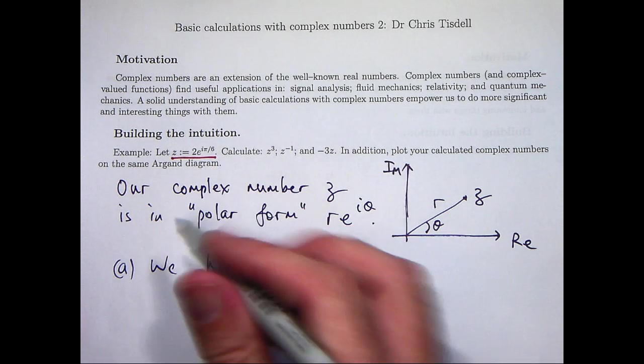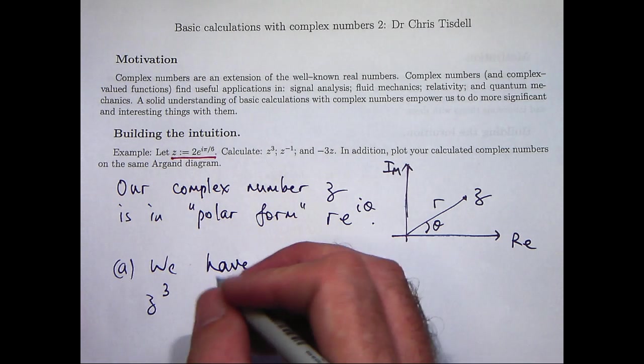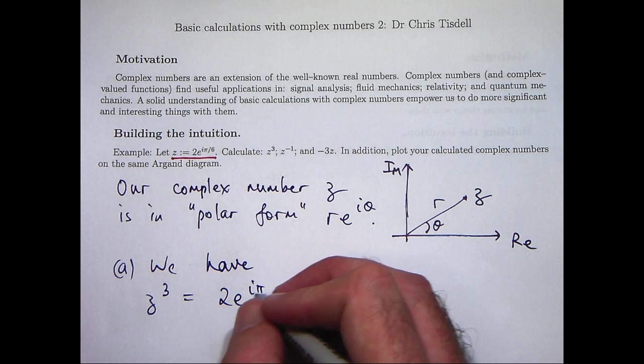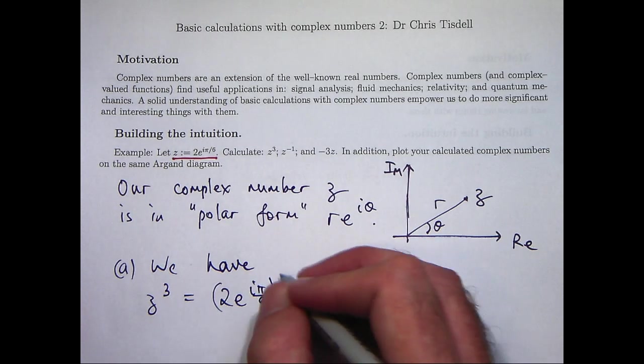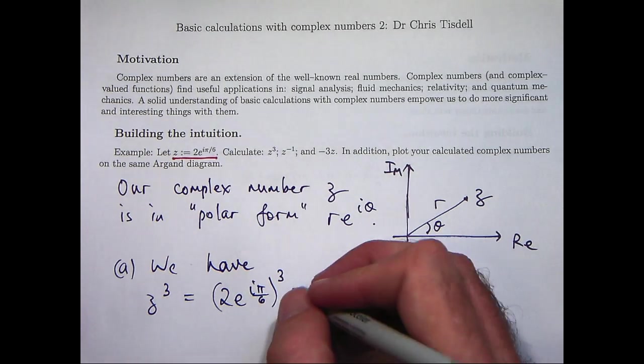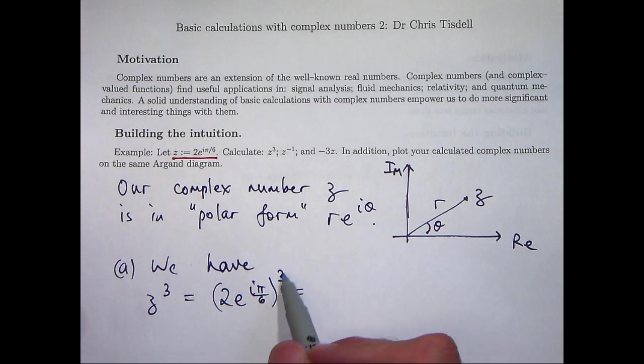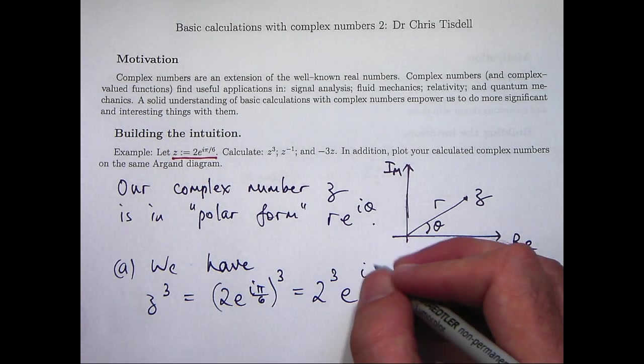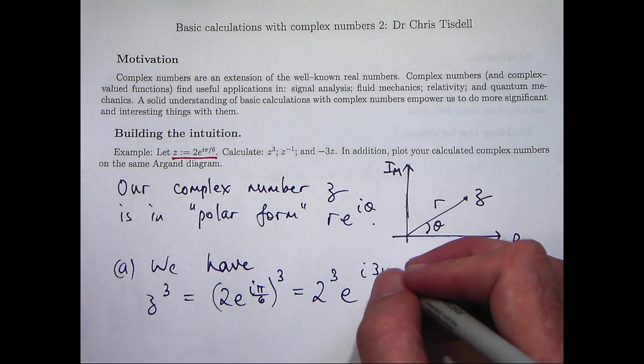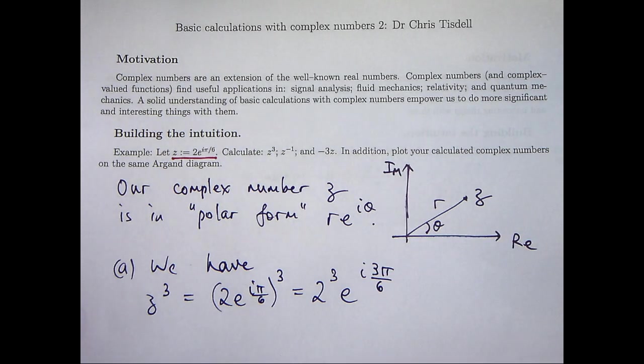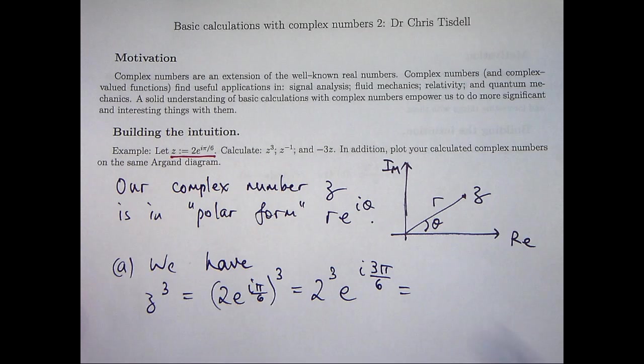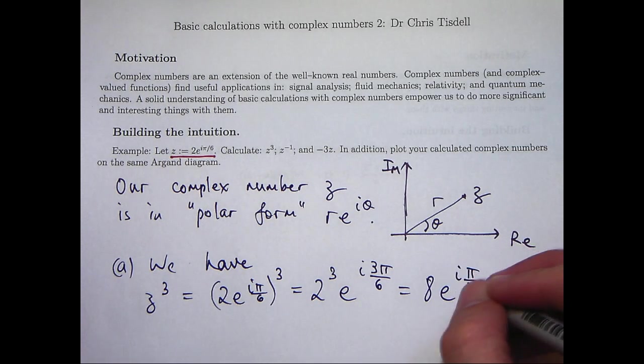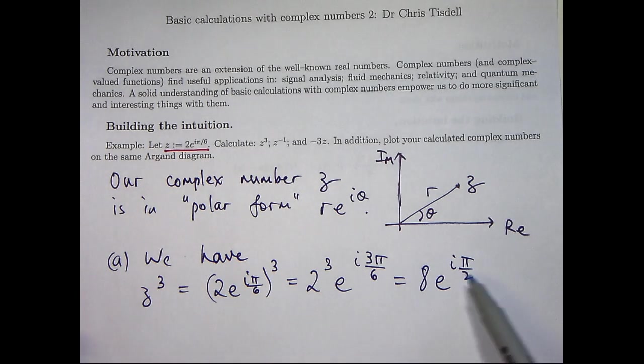So if this is our z, let's consider z³. Take our polar form and cube everything. Now, it's basically just index laws. And all I need to do now is simplify accordingly, and I come up with another polar form.